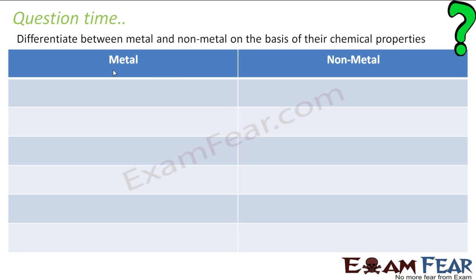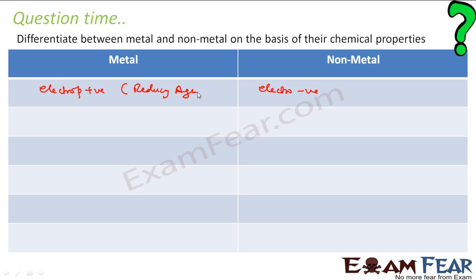I will write the chemical properties of these metals and non-metals. The first difference is: metals are electropositive and non-metals are electronegative. That means metals are reducing agents and non-metals are oxidizing agents.